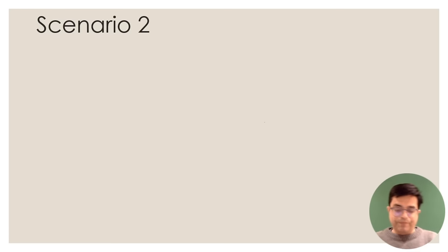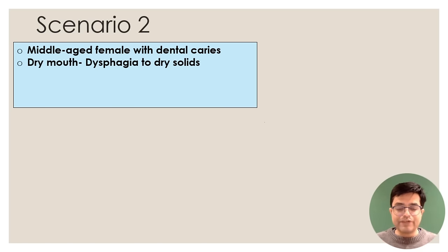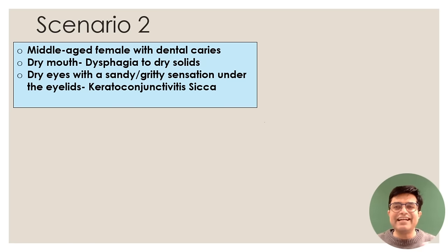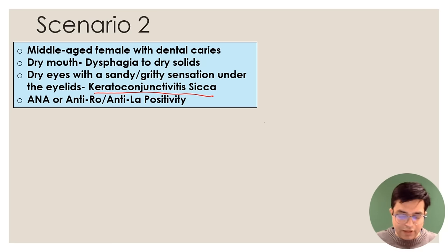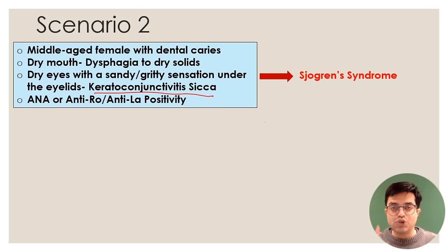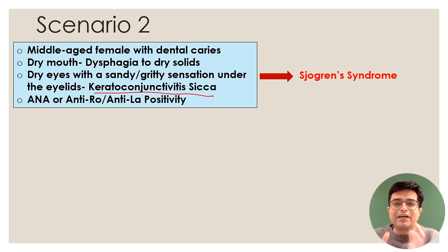Scenario two: a middle-aged female with dental caries, dry mouth, dysphagia to dry solids, and dry eyes (sandy or gritty sensation under the eyelids — keratoconjunctivitis sicca). ANA is positive, or antibodies like anti-Ro or anti-La are positive. If two or three of these points are mentioned, the likely diagnosis is Sjögren's syndrome. Remember: scleroderma means skin thickening; Sjögren's syndrome means everything becomes dry.